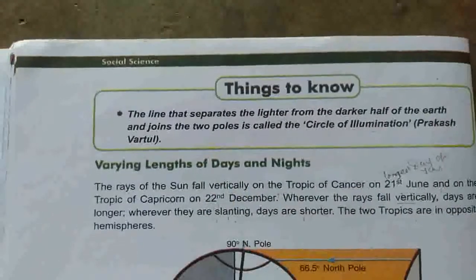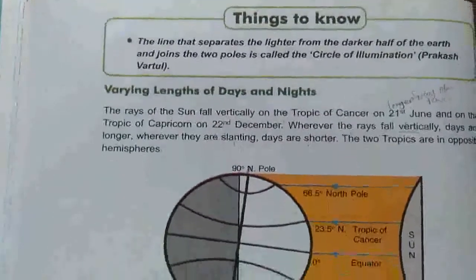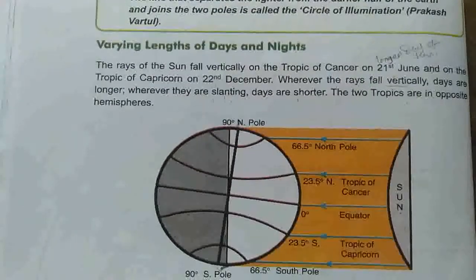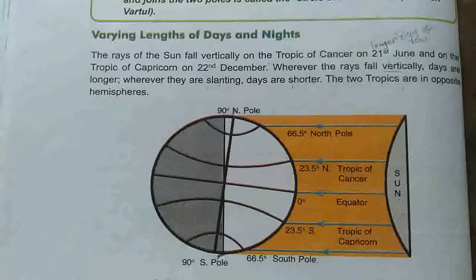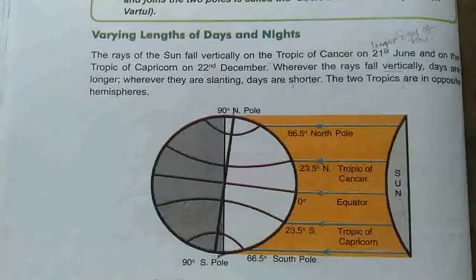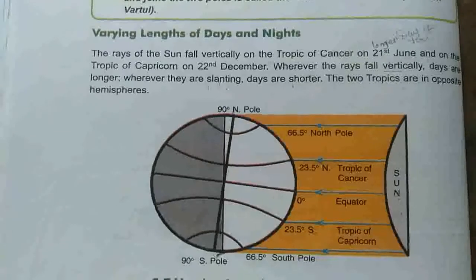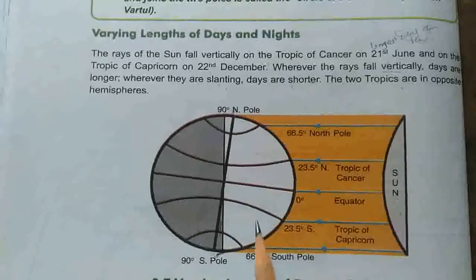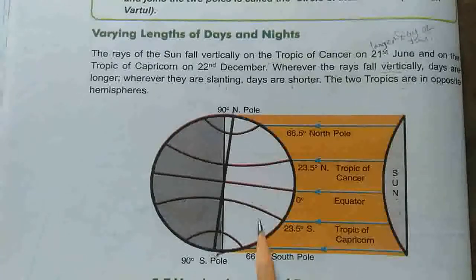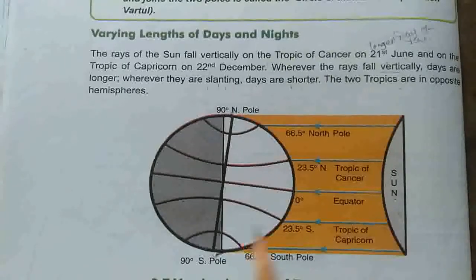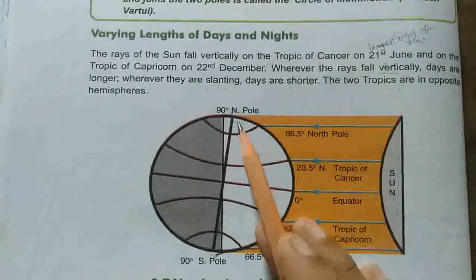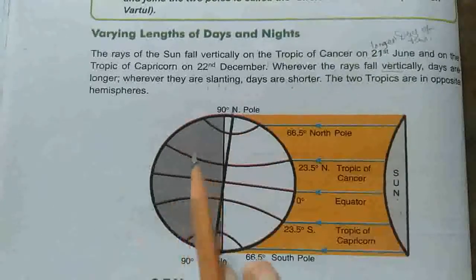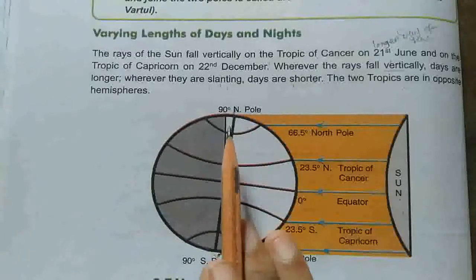Prakash Vrutta — which divides the earth into two parts: the dark half and the lighter half. So here we see the two different parts. The part of the earth on the sun's side is day, and the other side is night. And that is why, as the earth moves on its axis, day and night occur.